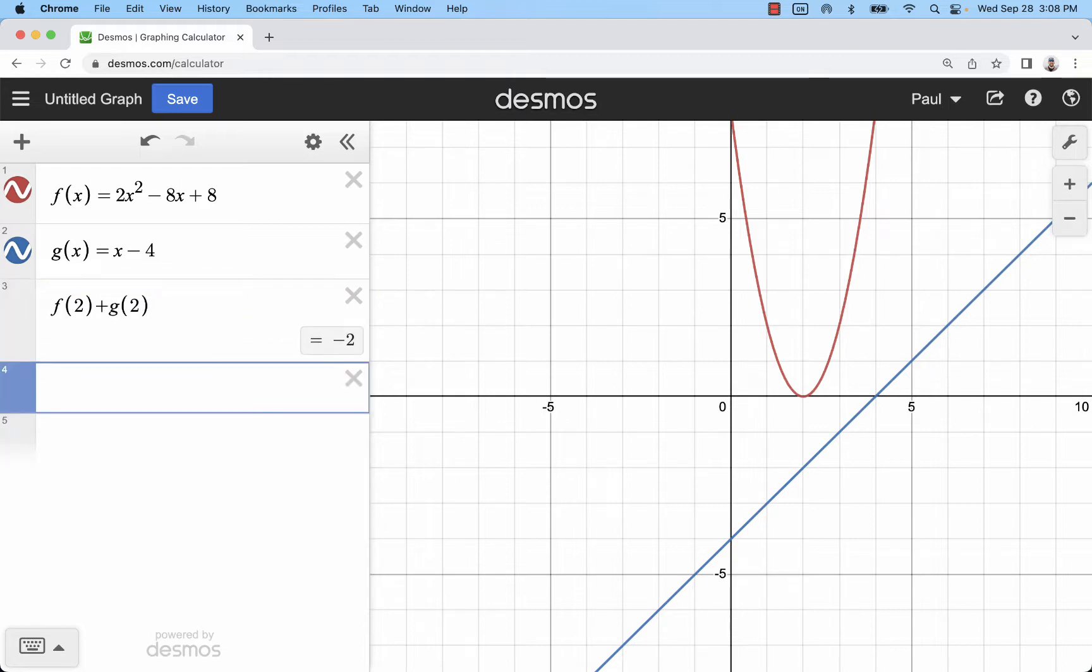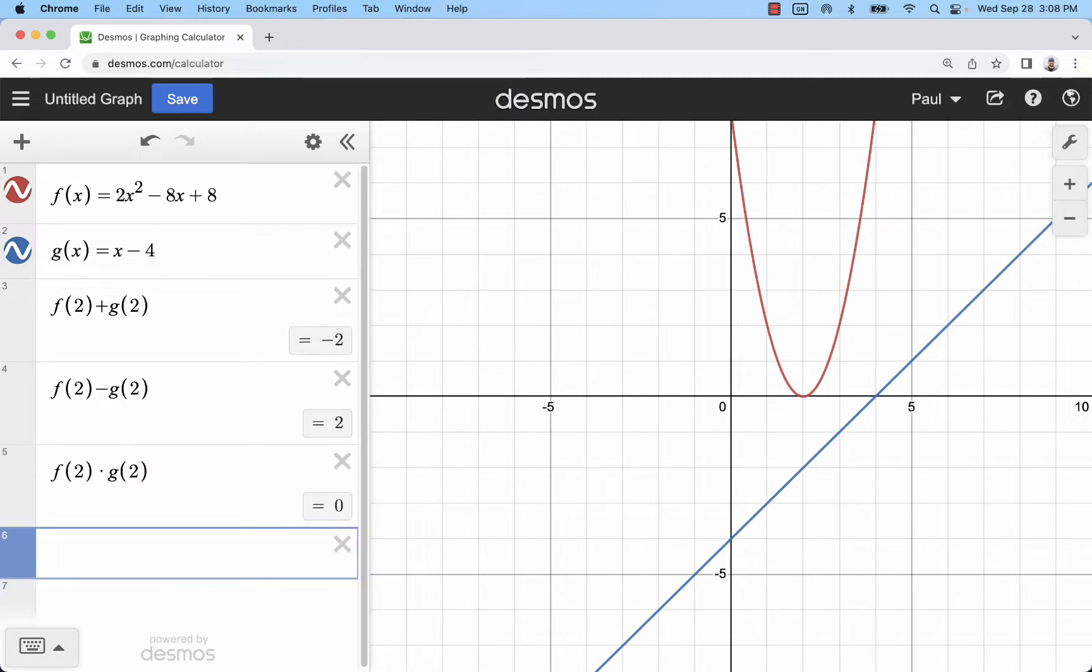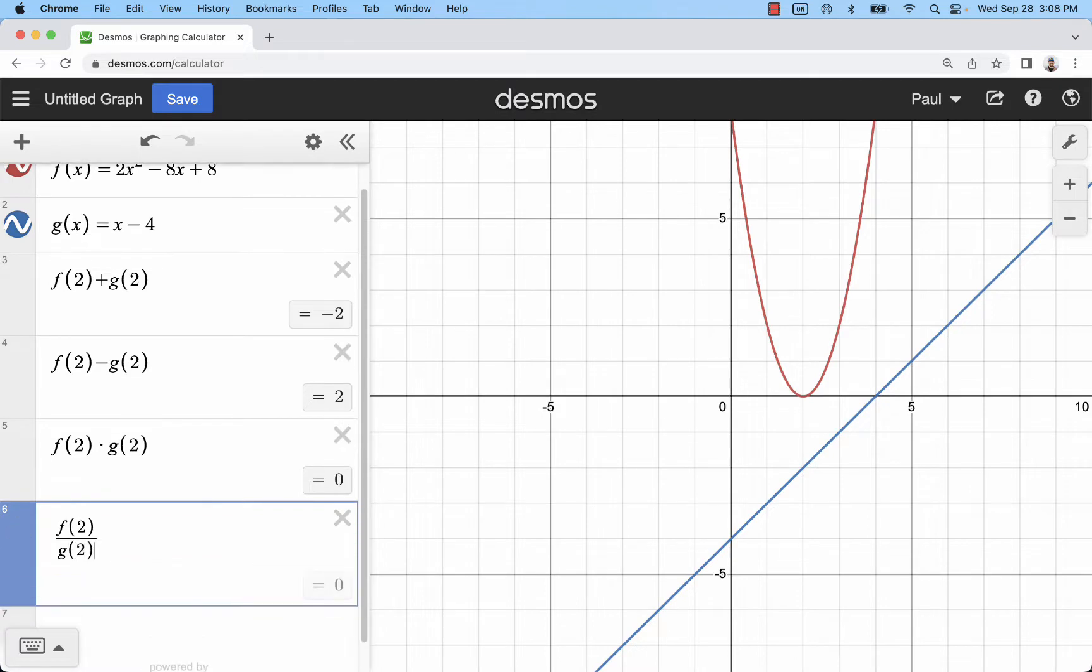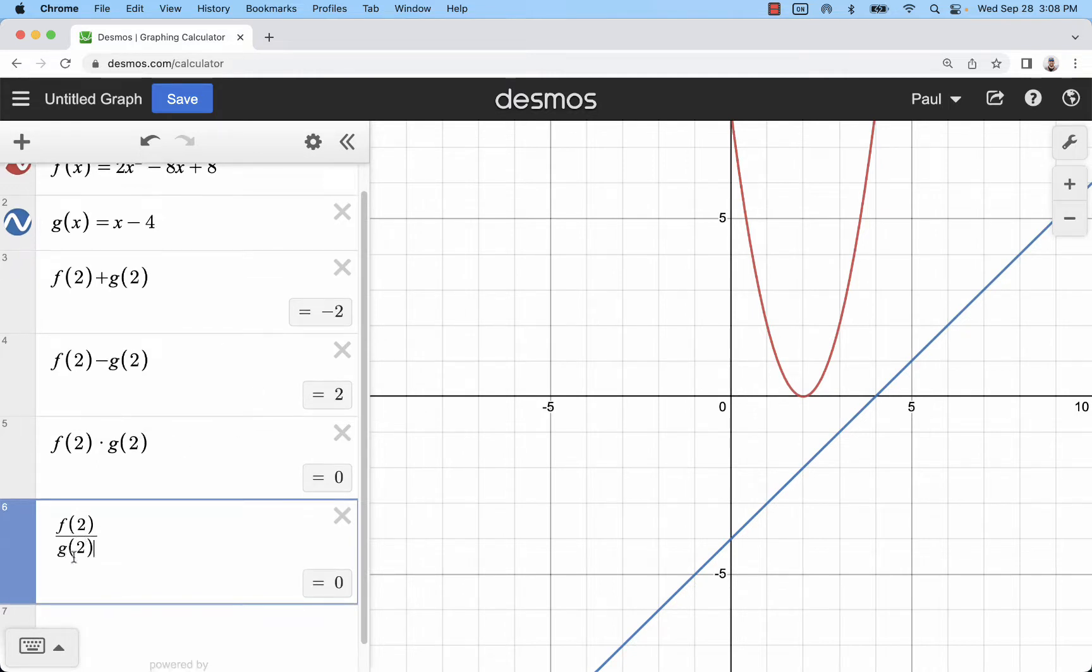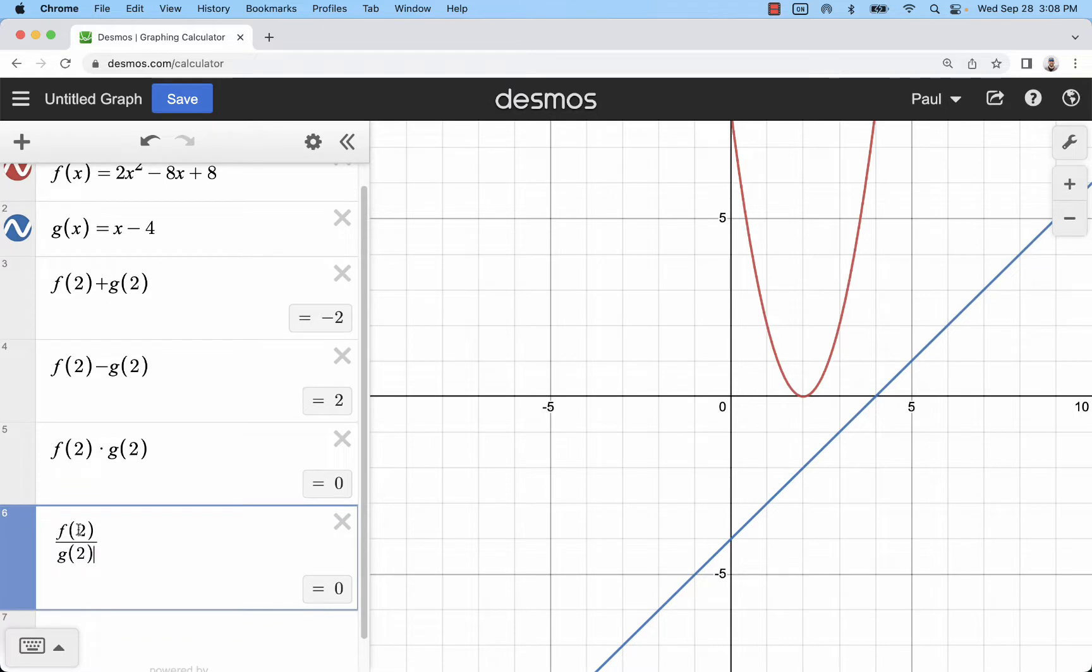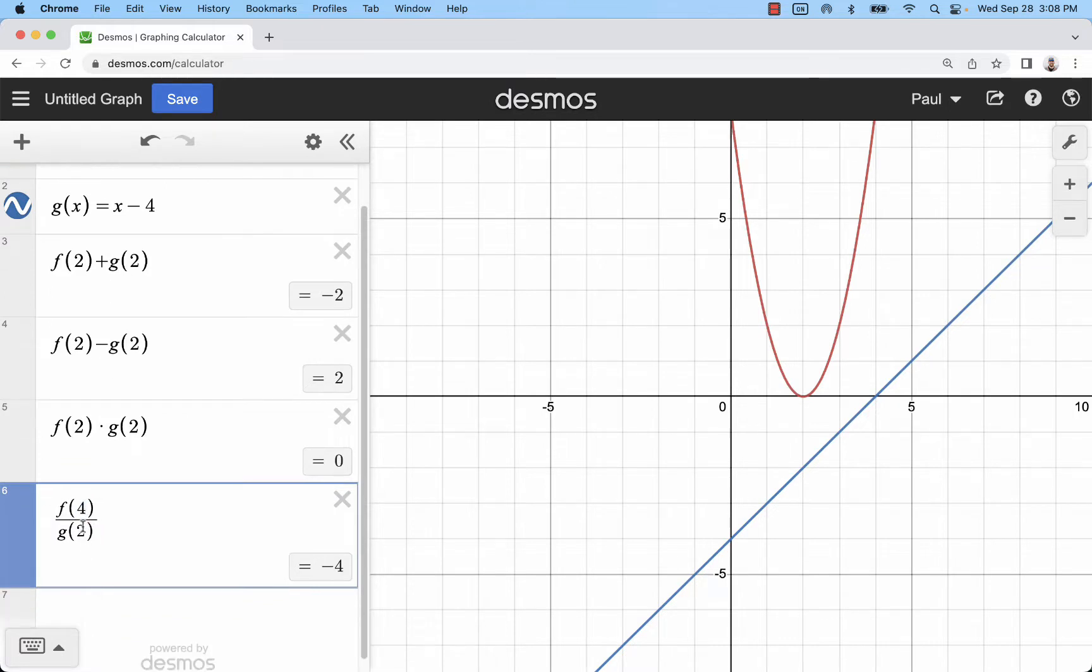Or if I want to do f - g evaluated at 2, I'll do the same thing with the minus sign. I can also multiply and divide in that same style. Now you may have a situation where the input is undefined at that point when you're dividing, because you are putting a polynomial in the denominator. And so in this case, if I change this to 4, that's going to be undefined.